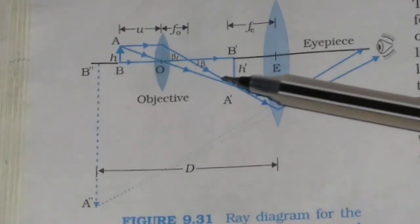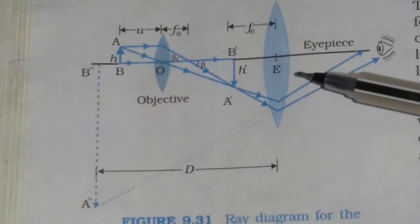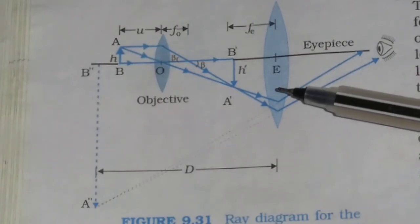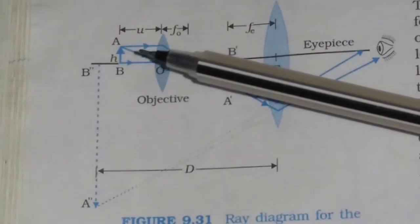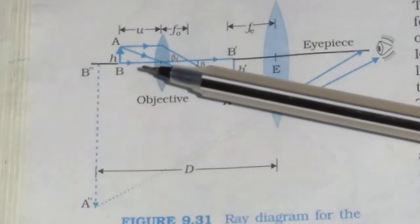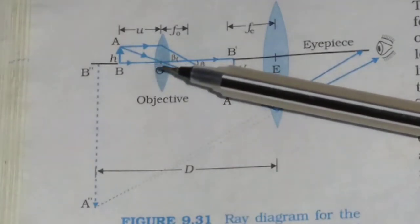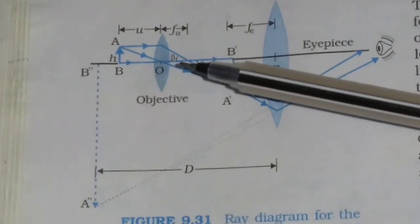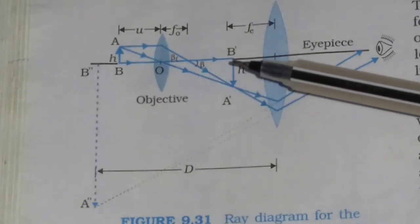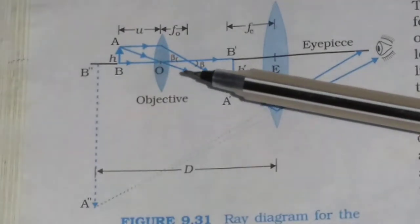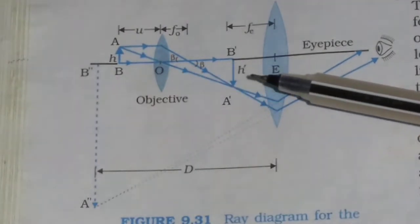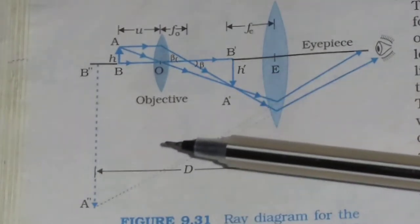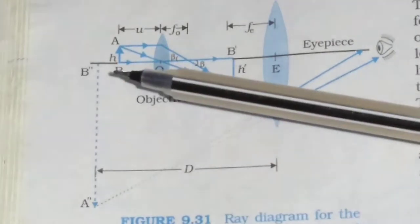Construction: Both the objective and the eyepiece are mounted coaxially in a cylindrical tube. The object AB is placed close to the objective, which is beyond the focal length of the objective. The image A'B' due to the objective is formed within the focus of the eyepiece. The final image is formed at A''B''.